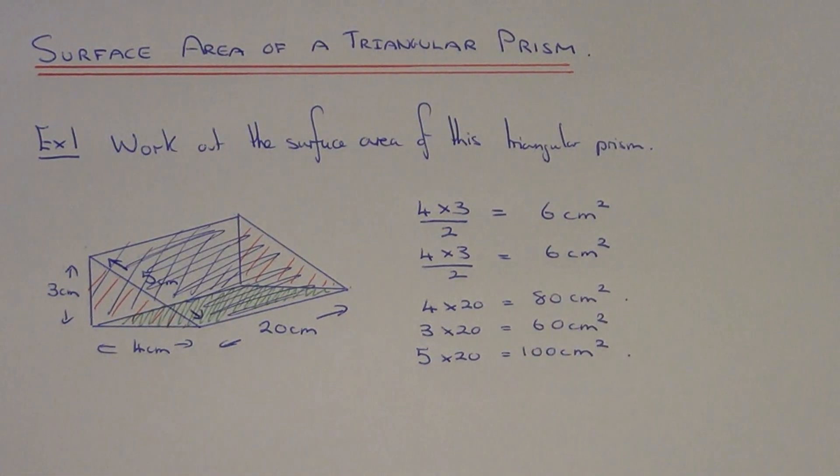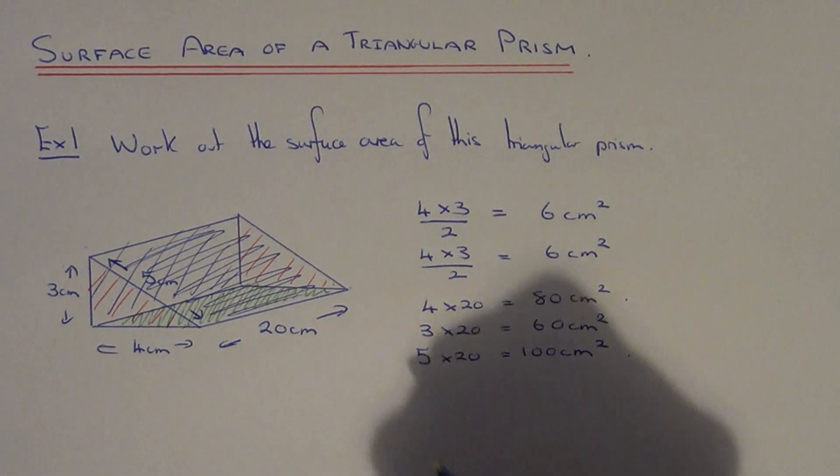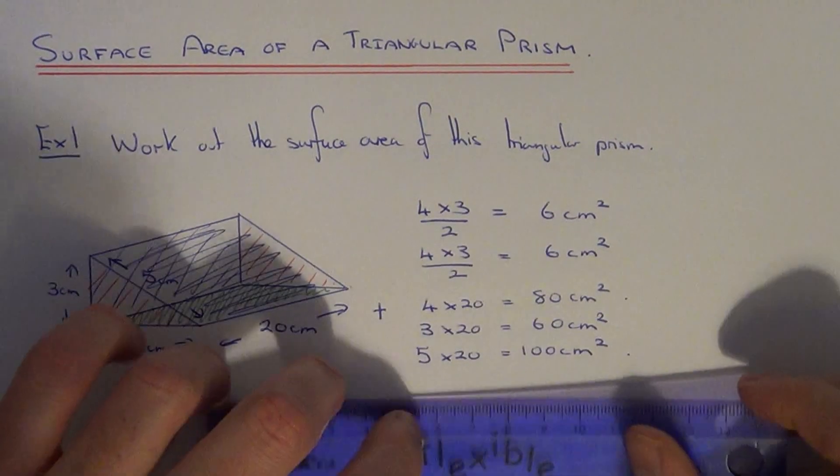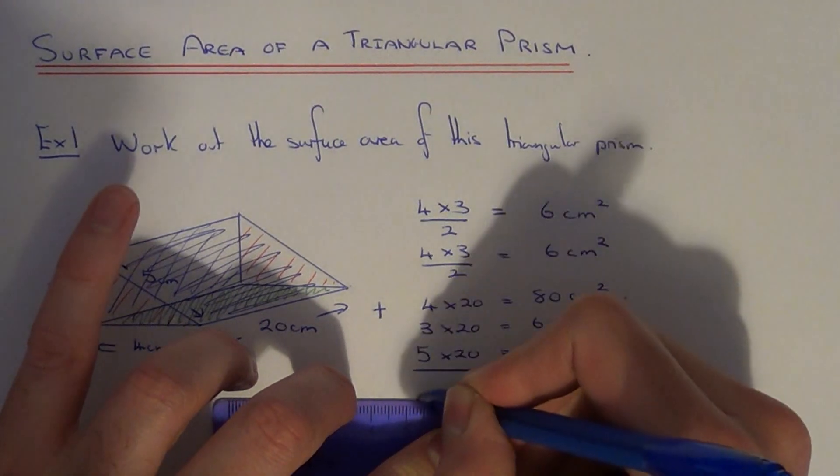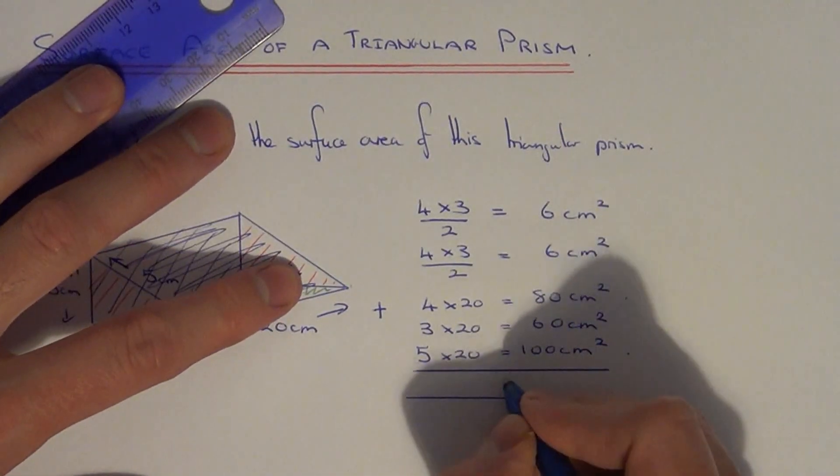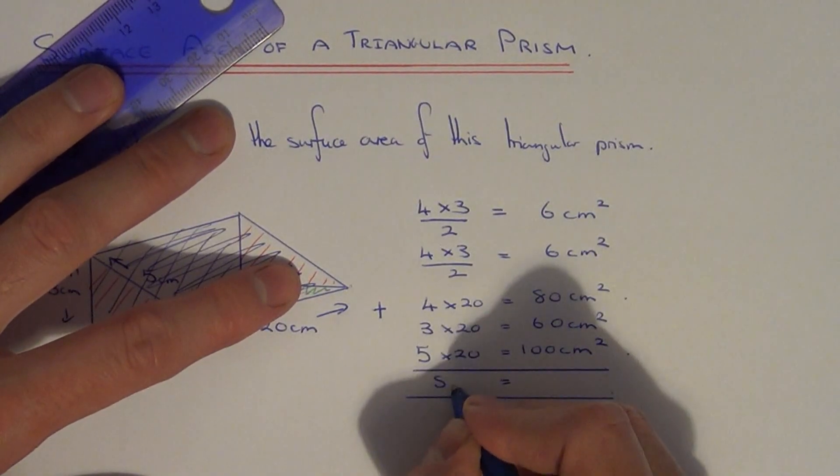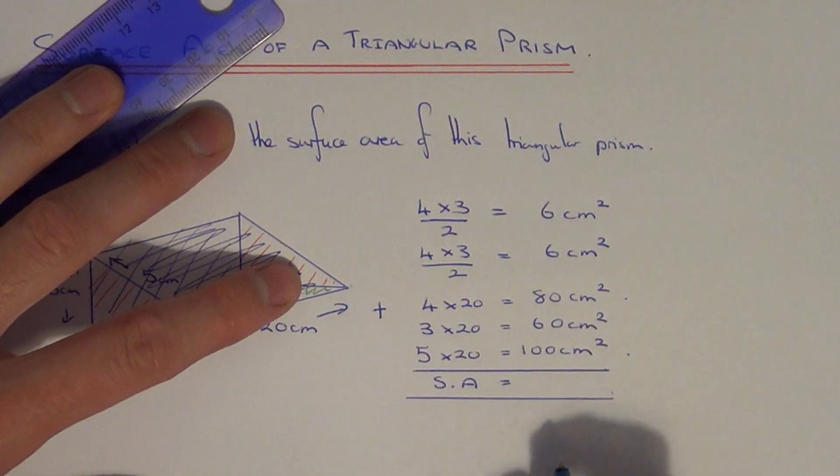So we've worked out the area of the five faces. So the final thing to do now is to add together all these areas. And that will give us our final area, final answer for the surface area.